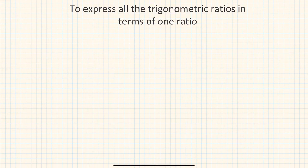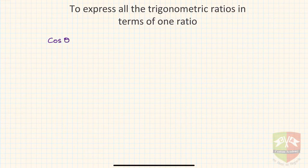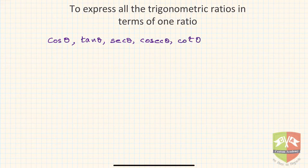Hello friends, welcome to yet another session on trigonometry. In this session we are going to express all the trigonometric ratios in terms of one ratio. We have to express cosine theta and all other trigonometric ratios like tan theta, secant theta, cosecant theta, and cotangent theta — all in terms of sin theta.